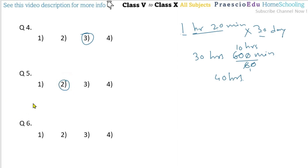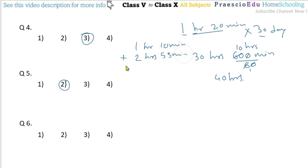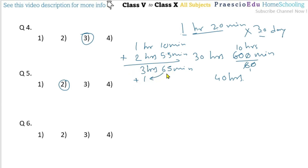Question 6: Sanjay travelled 1 hour 10 minutes on a bicycle and 2 hours 55 minutes by bus. How long did he travel altogether? Adding: 55 + 10 = 65 minutes and 1 + 2 = 3 hours. Since 65 minutes exceeds 60, convert to 1 hour and 5 minutes remaining, adding that hour to 3 gives 4 hours and 5 minutes. This is shown in option number 3.